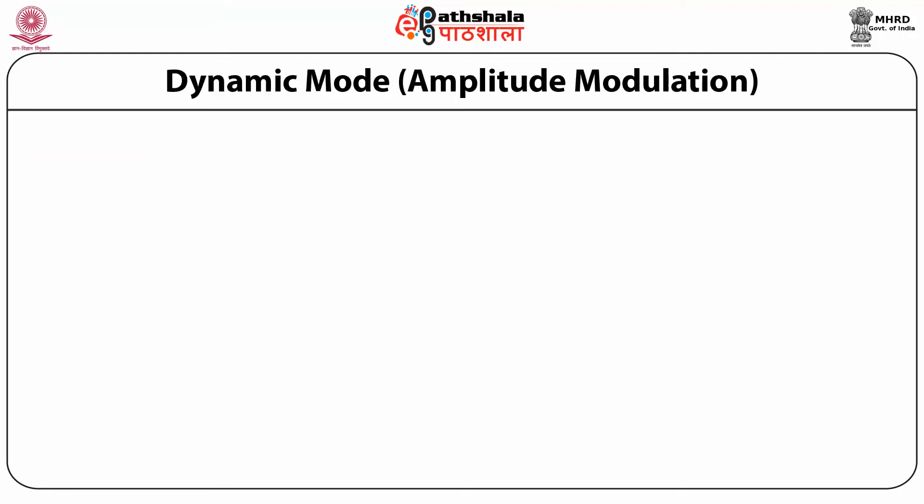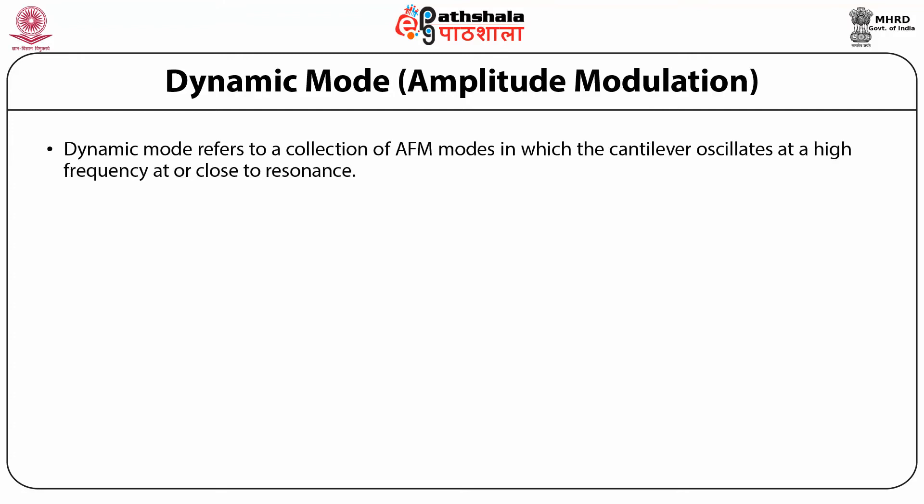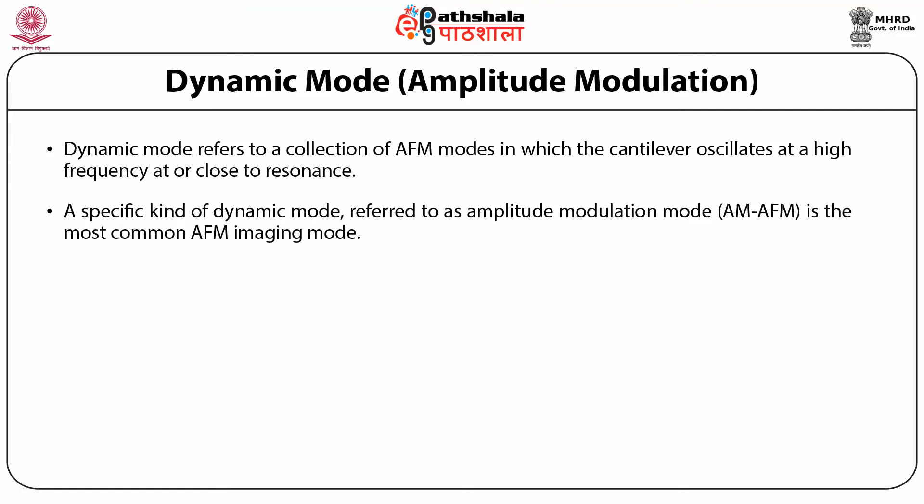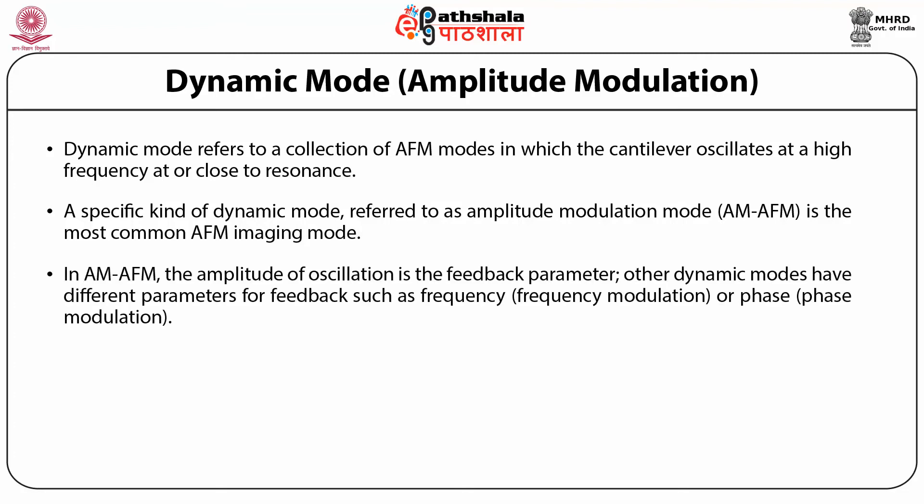The dynamic mode, or amplitude modulation, refers to a collection of AFM modes in which the cantilever oscillates at a high frequency or closer to resonance. A specific kind of dynamic mode is referred to as AM-AFM, which is the most common AFM imaging mode. In AM-AFM, the amplitude of oscillation is the feedback parameter. Other dynamic modes have different parameters for feedback, such as frequency or phase for frequency modulation and phase modulation.